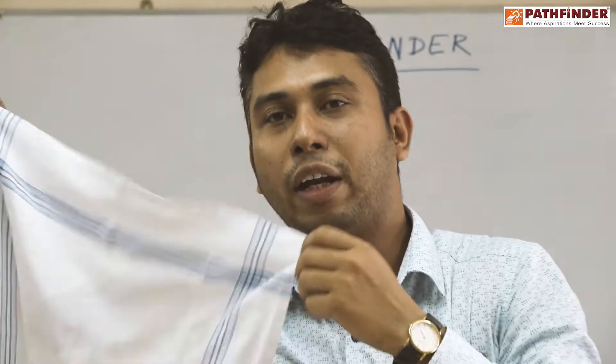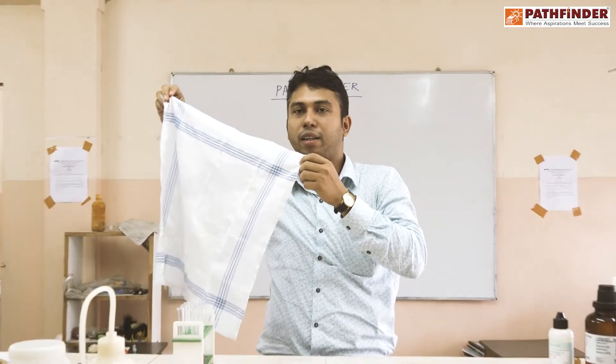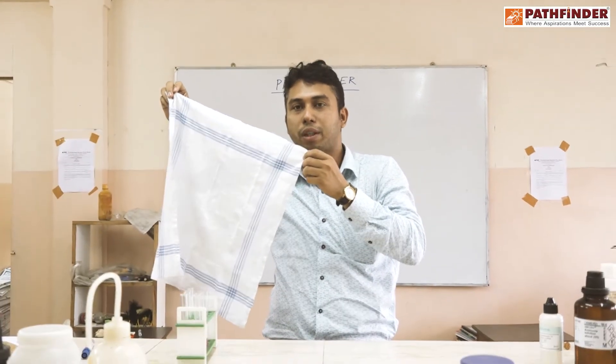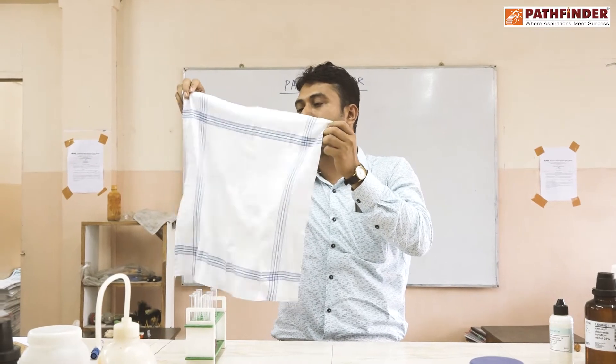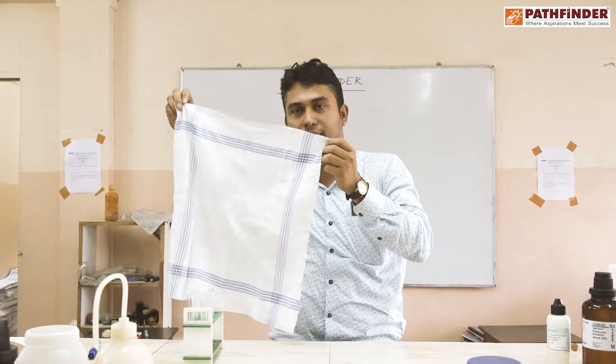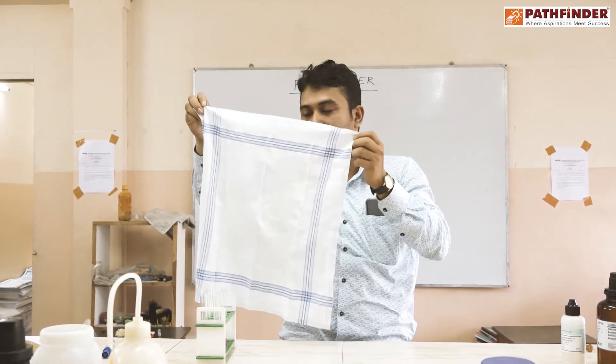Basically, we can see that the phenolphthalein indicator in alkaline solution gives a pink color. But the neutral solution is very clear, and the acidic medium is colorless.